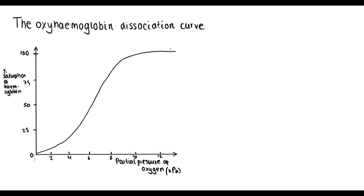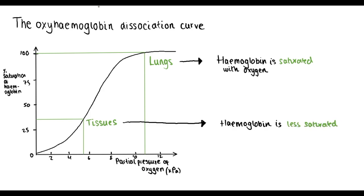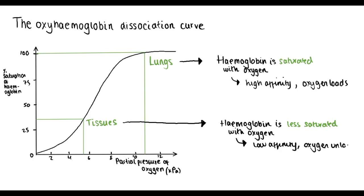We need to pay close attention to two parts of this graph. Where the partial pressure of oxygen is high, that shows us the percentage saturation of haemoglobin in the lungs. Where the partial pressure of oxygen is lower, that shows us the saturation of haemoglobin in tissues. So in the lungs, as you would expect, haemoglobin is saturated with oxygen, whereas in the tissues, haemoglobin is less saturated. That's because haemoglobin has a high affinity for oxygen in the lungs so oxygen loads, whereas in the tissues, haemoglobin has a low affinity for oxygen, so oxygen unloads.